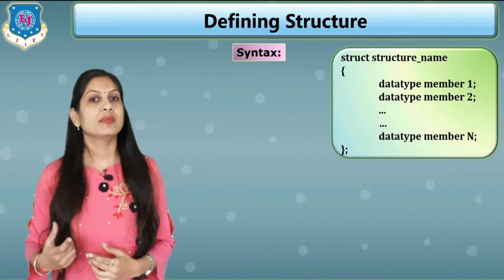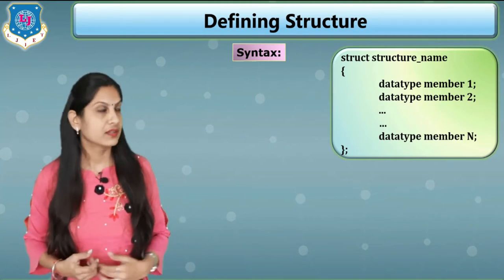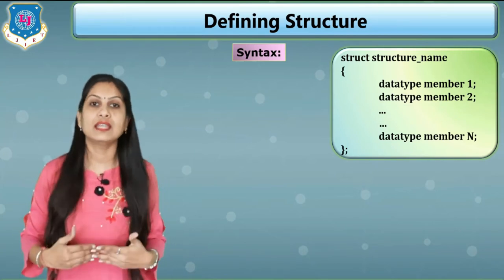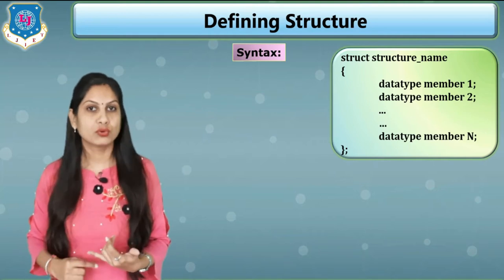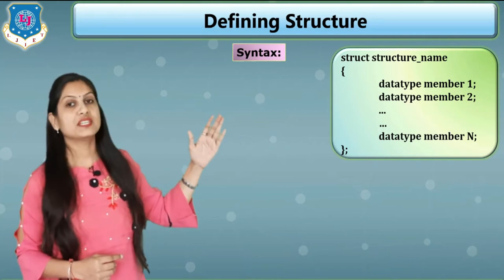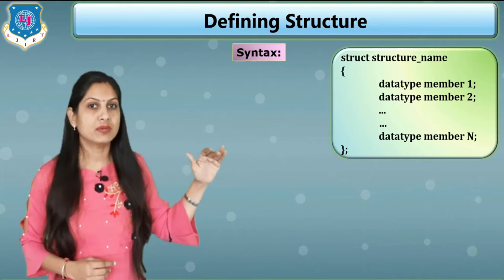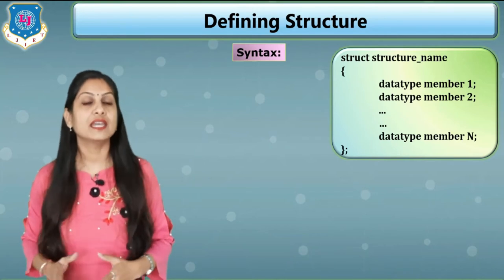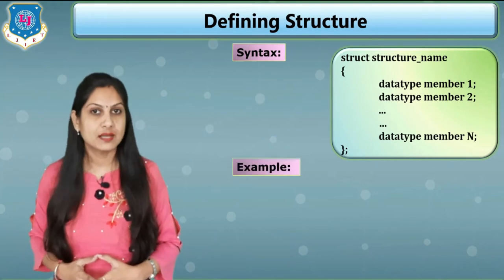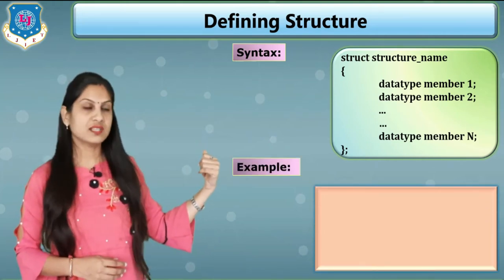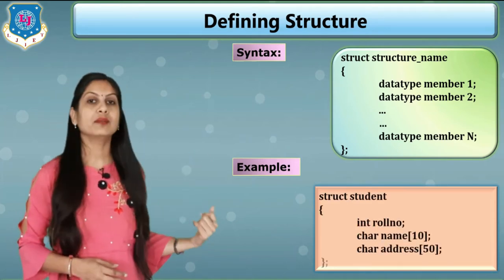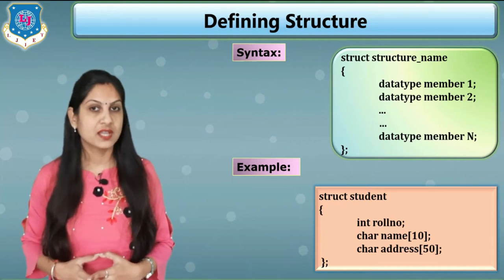Inside the structure's curly brackets we have to write the members. The data type is nothing but integer, float, and so on. The members — suppose I am considering a student — would be details like role number, name, address, birth date, and more. You can write data type and member 1, data type and member 2, likewise creating any number of members.